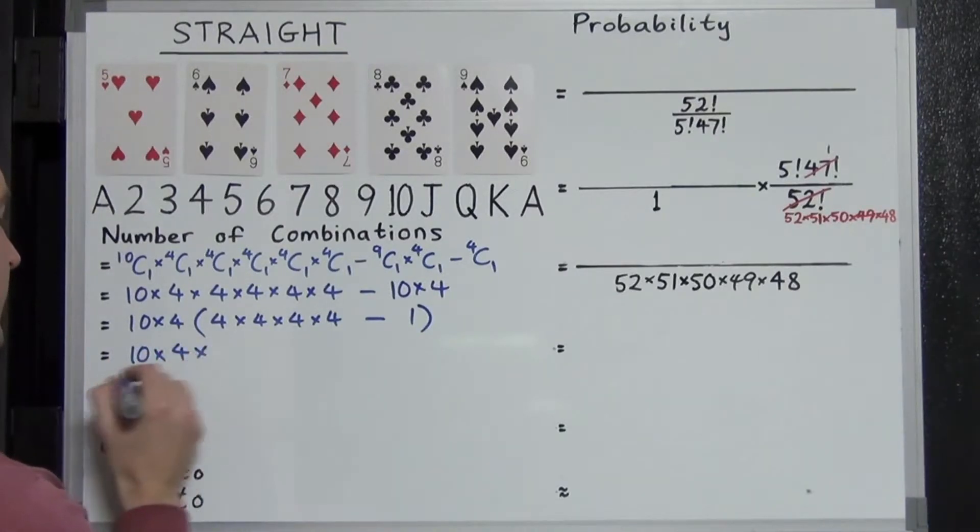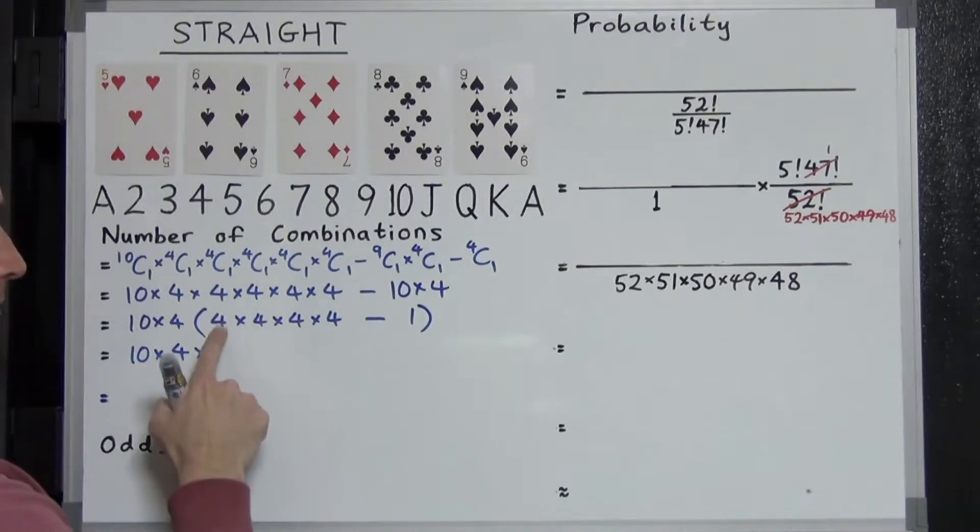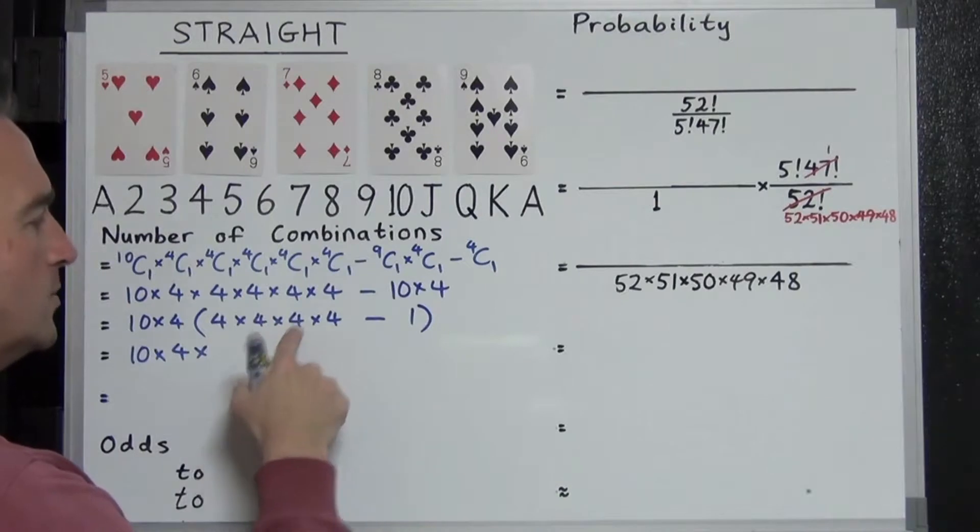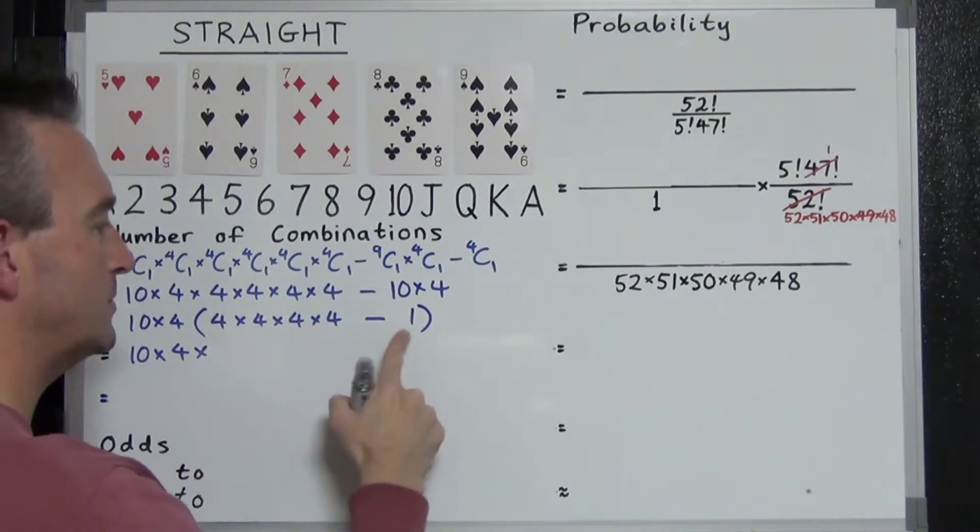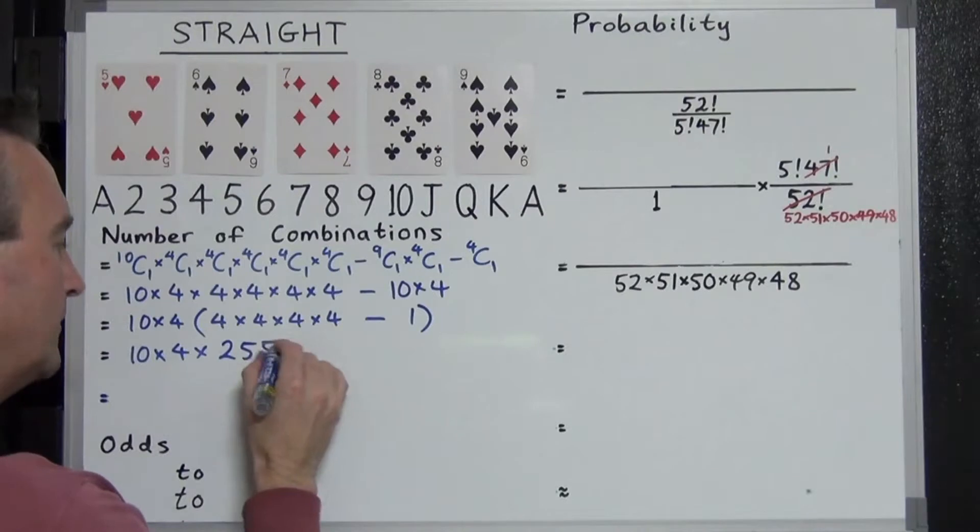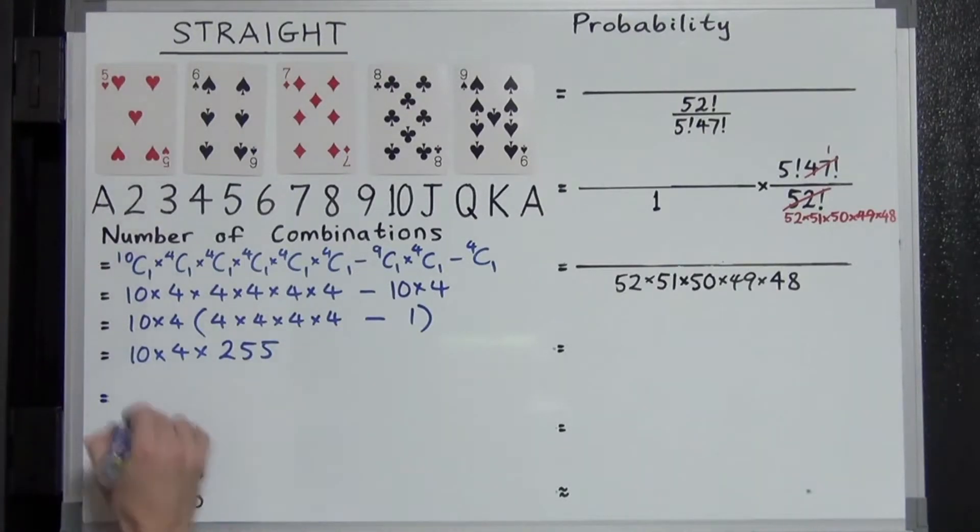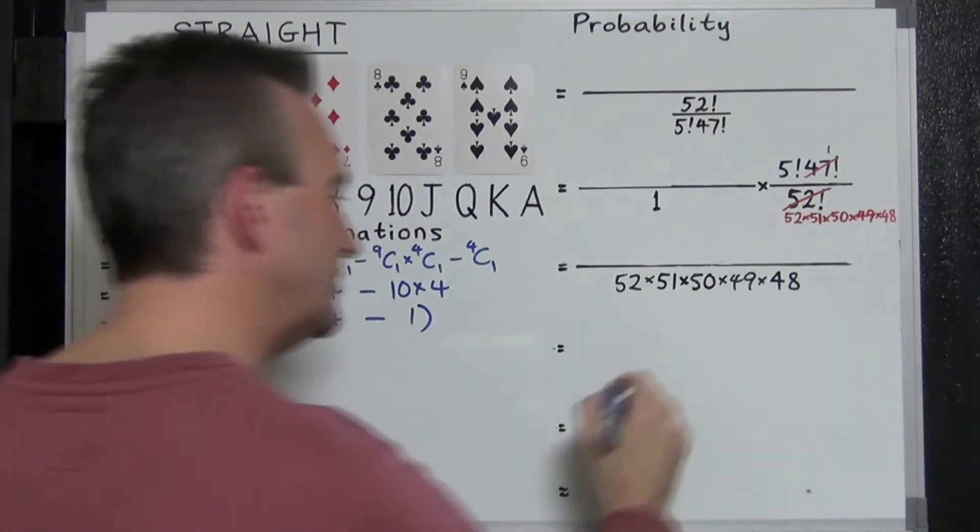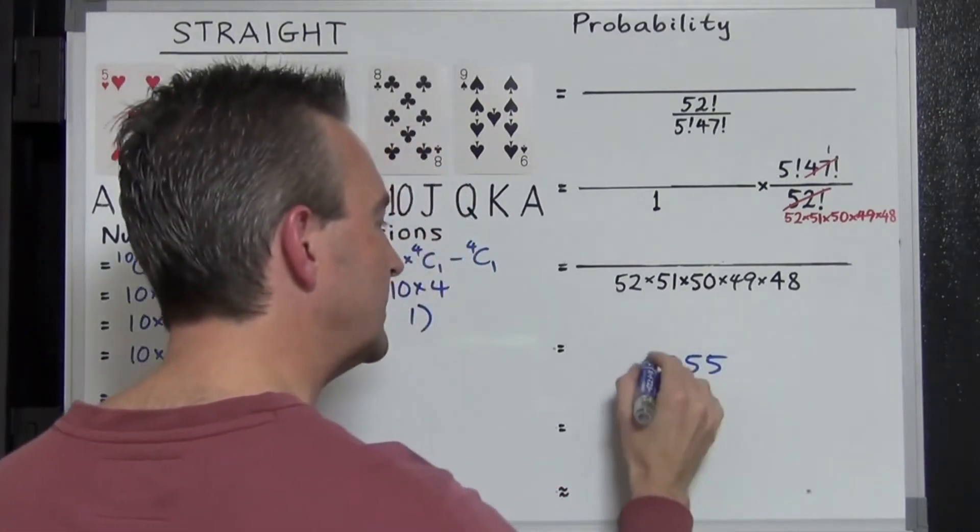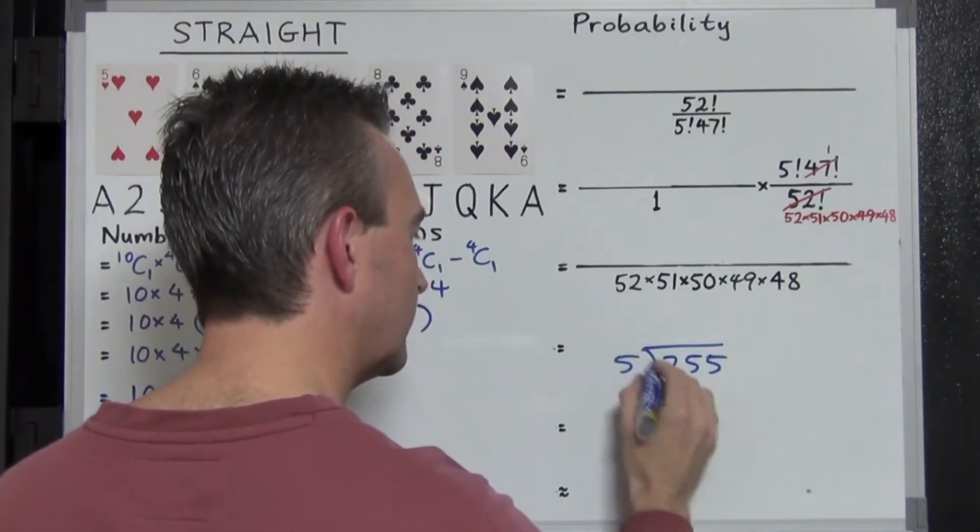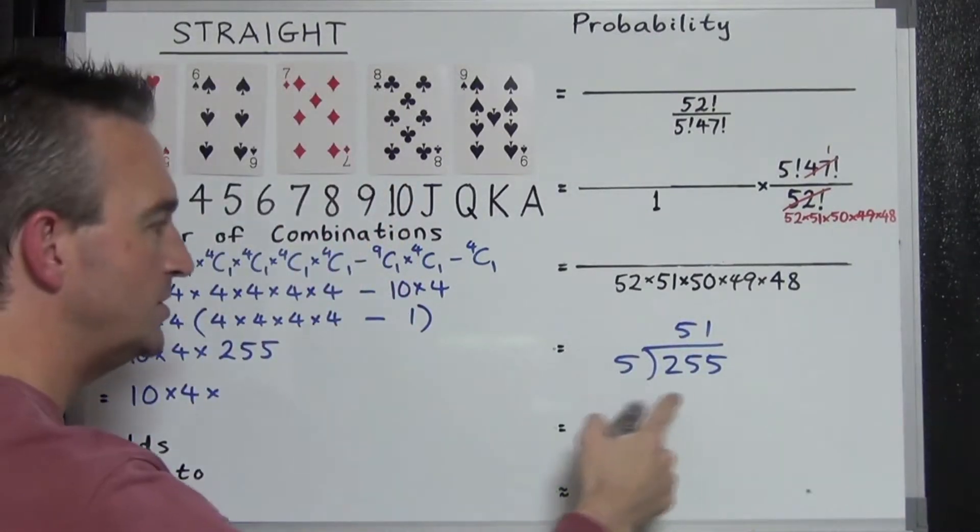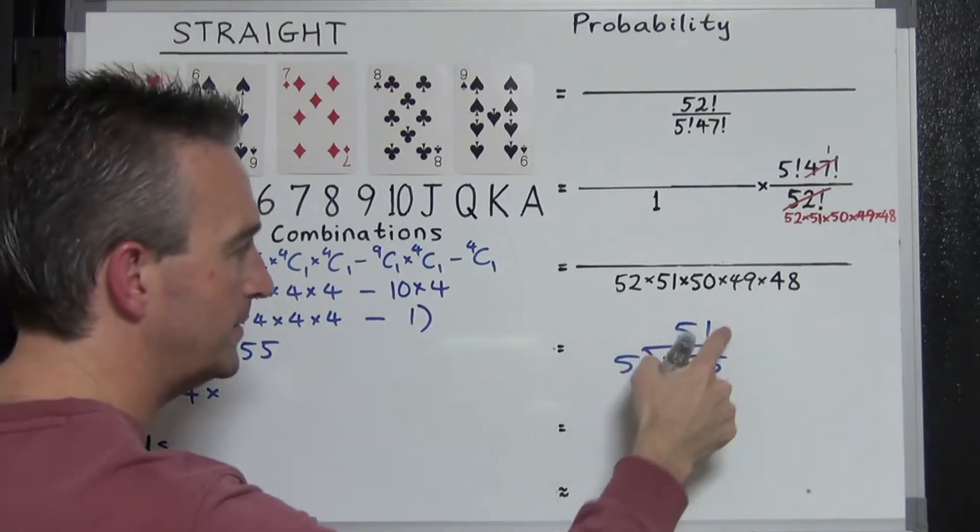Continuing on. 10 times 4. What's all this stuff here in the brackets? 4 times 4 times 4 times 4. 4 times 4 is 16. Times 4 is 64. Times 4 again is 256 minus 1, which is 255. And I'm not quite going to do that on the calculator just yet. 10 times 4 times 255. I just want to factor that. 255, well, it's got a 5 on the end. It must be divisible by 5. 5 into 25 goes 5. 5 into 5 goes once. So 255 can be written as 51 times 5.